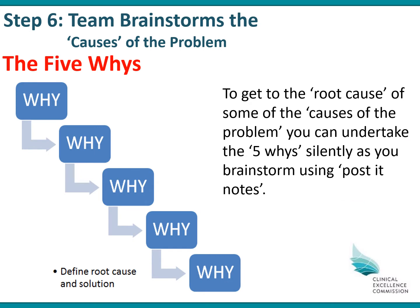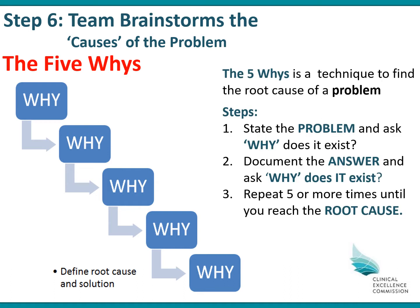When brainstorming, you can also use a technique called the 5 Whys to help you get to the root cause of the problem. How it works is you state the problem and ask why it exists, document the answer, then ask why that exists, and repeat five or more times until you get to the root cause. You can use this technique silently while brainstorming.